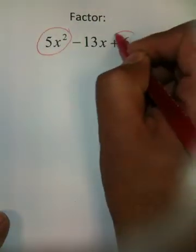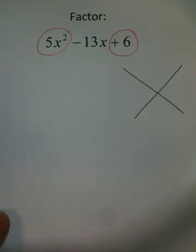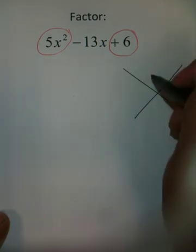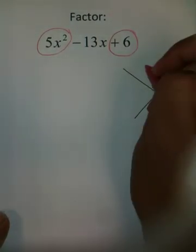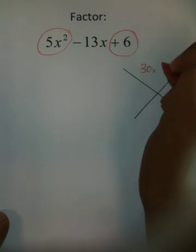Now, you'll notice how I'll circle the first term and the last term. They're your favorites. You're going to take these two terms and multiply them together, which will give you 30x².